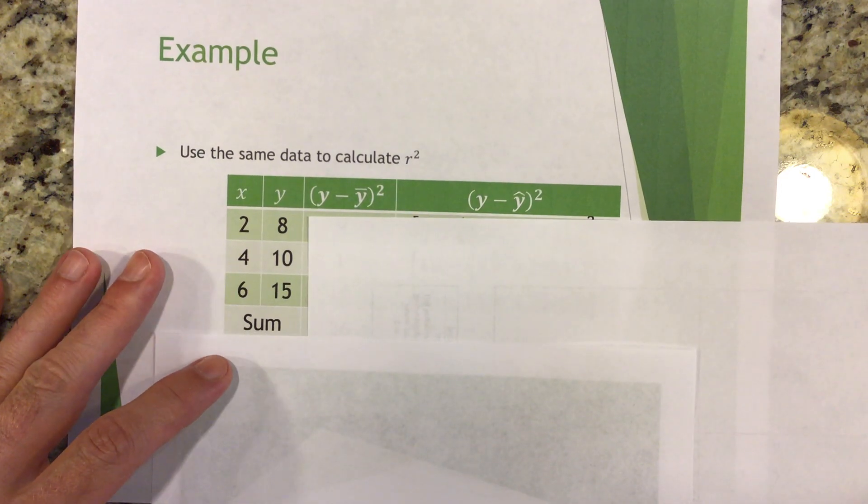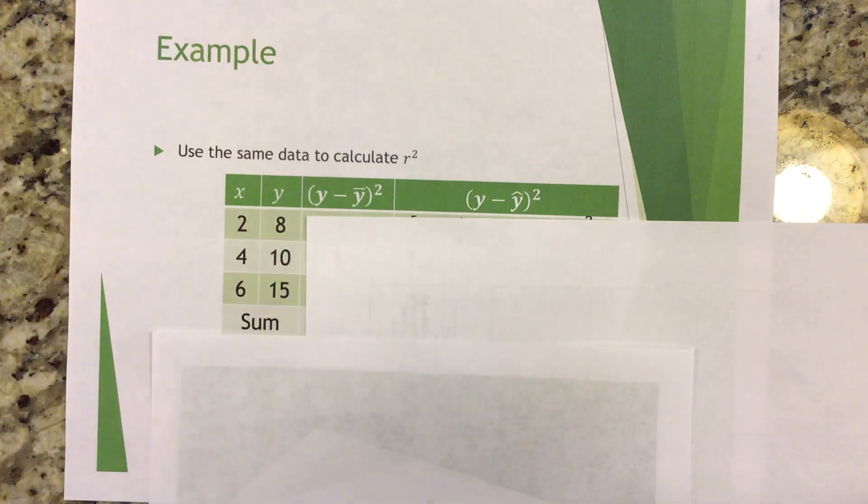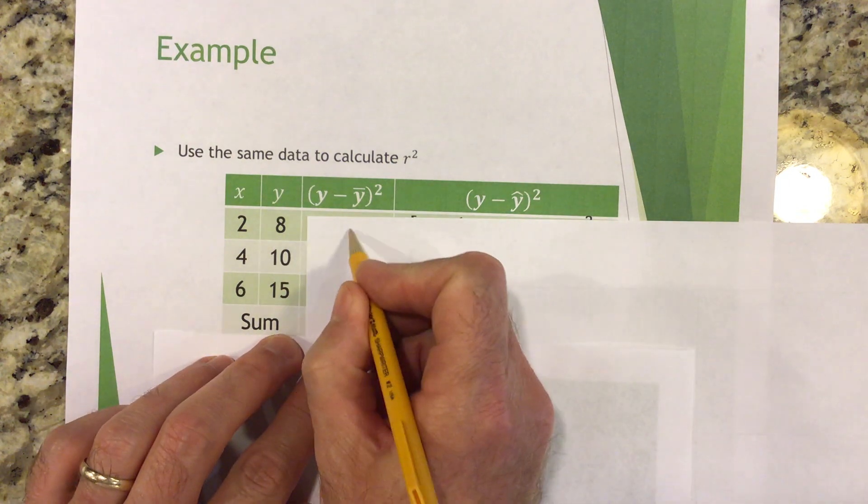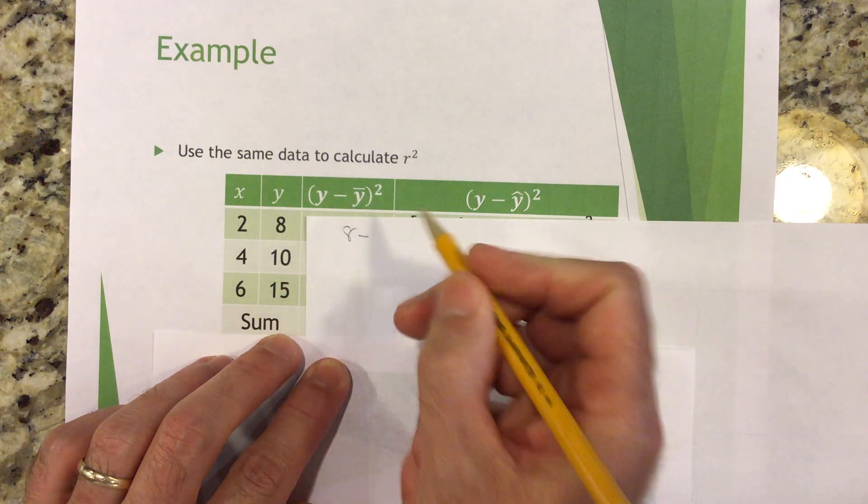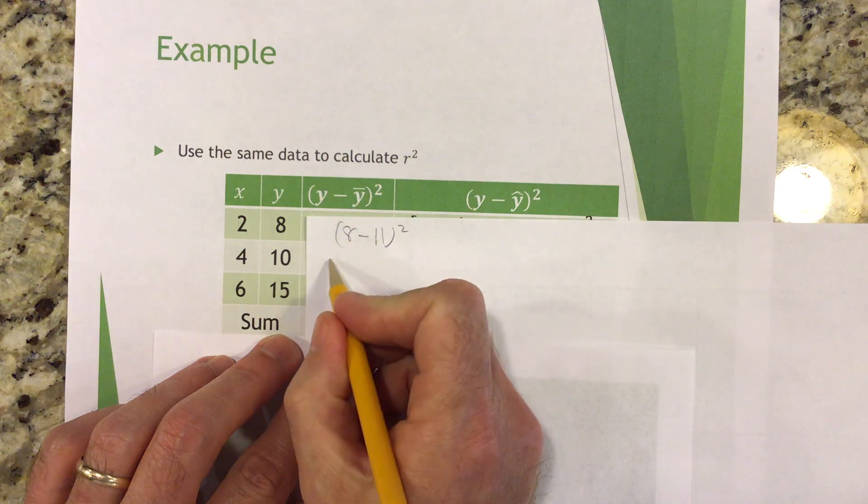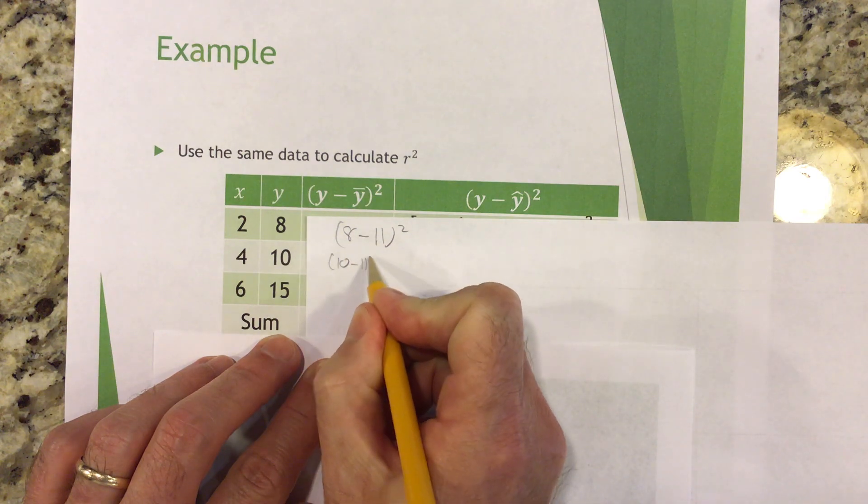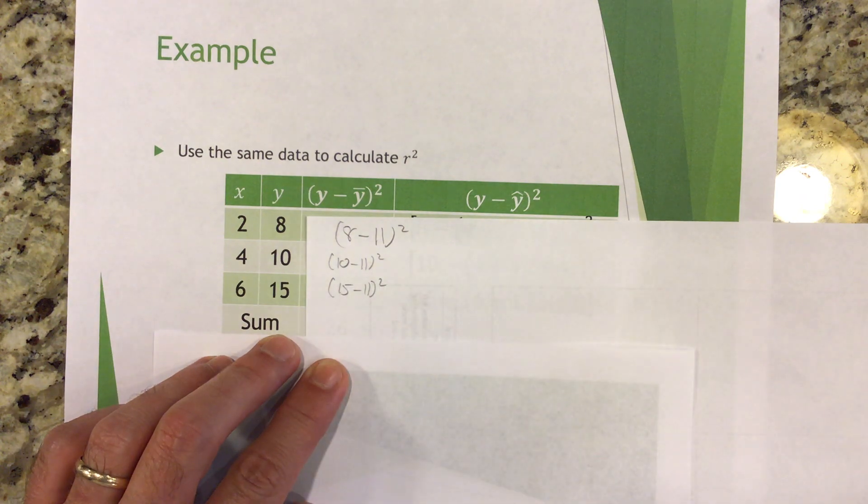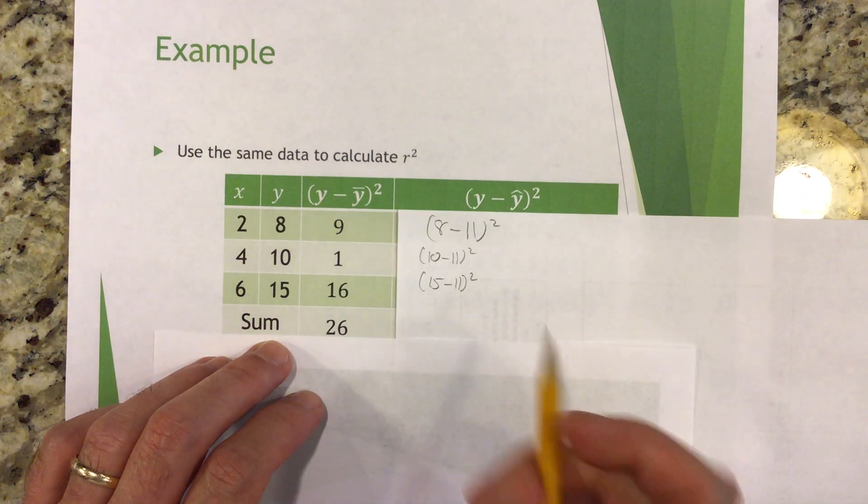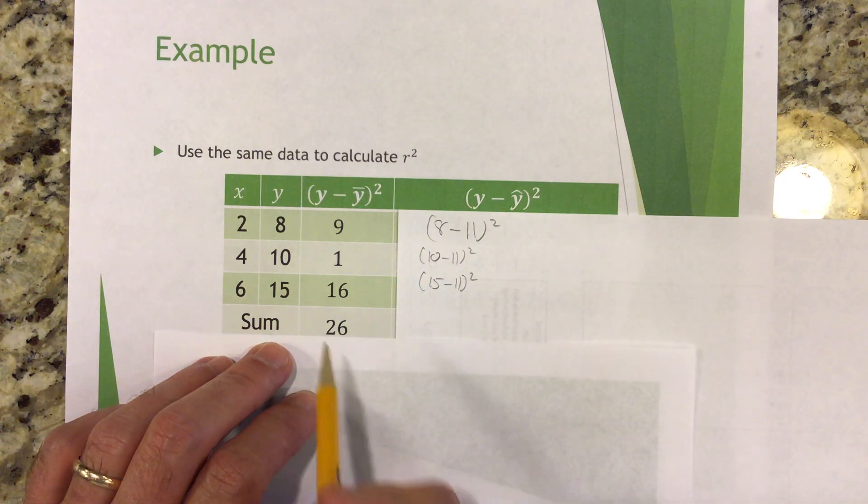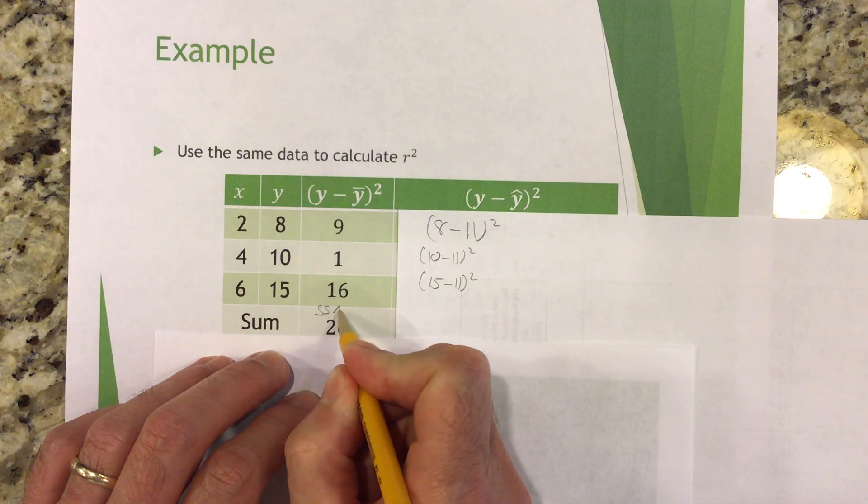All right. So, my first column is going to give me SSM, right, the mean. So, I take my Y value, eight, right, I'm going to do eight minus the Y bar, which we said was 11 and I'm going to square it. My next Y value is 10 minus the mean of Y and my last one was 15 minus the mean of Y and I'm going to square those all and, right, nine, one, 16 and then find the sum. So, there's SSM right there.